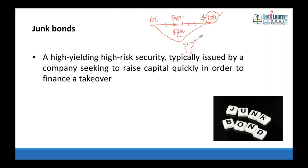Companies therefore go for credit ratings. Rating agencies like Standard & Poor's, Moody's, and Fitch verify the probability of default by checking a company's assets. Based on that, they assign ratings like AAA, which means the company is very strong with ample assets to repay its liabilities — investors can be highly confident.